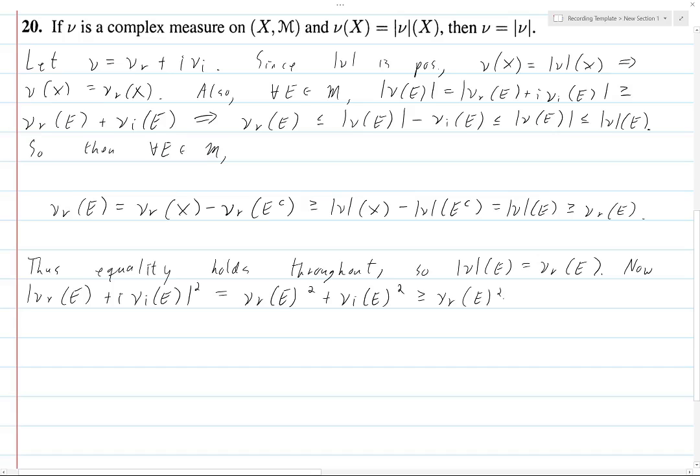And so, this inequality holds if you take the square roots. So, ν_r of e is less than or equal to this thing, which is just |ν| of e.